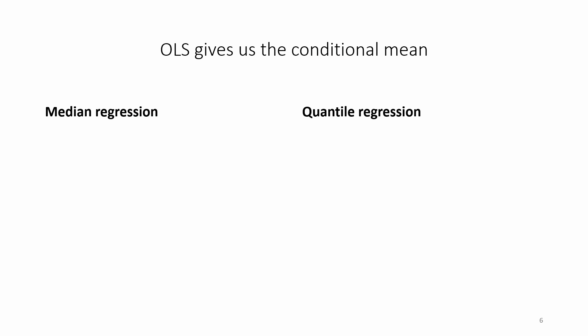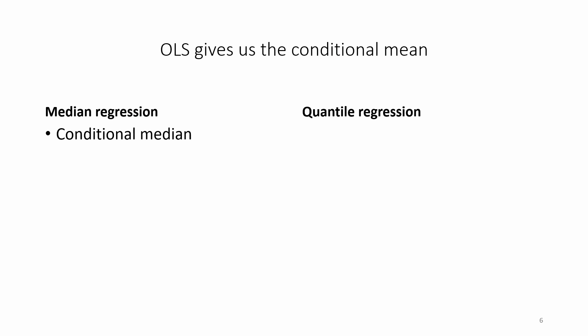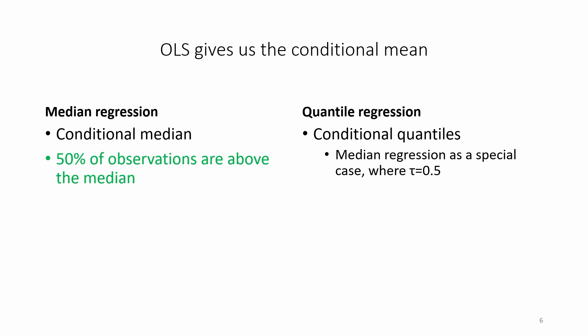OLS gives us the conditional mean. A similar idea holds for median regression and quantile regression. Median regression gives us the conditional median — the best fit line is such that 50% of observations are above it. With quantile regression, we look at conditional quantiles of Y conditional on X. Median regression is a special case of quantile regression at the 50% quantile, represented as tau equals 0.5. At the 90% quantile, tau equals 0.9, we have 10% of observations above the line of best fit.